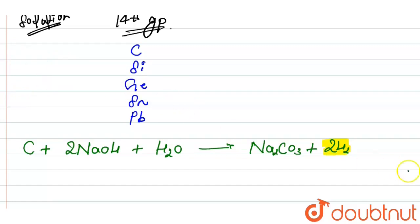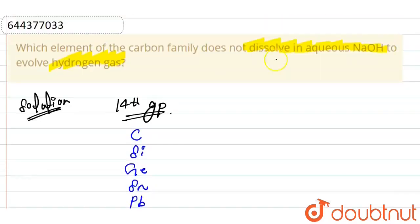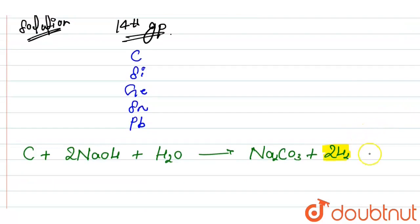Since carbon evolves hydrogen gas when reacting with aqueous NaOH, it is an incorrect option — it does not satisfy the condition of not evolving hydrogen gas.